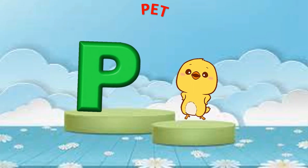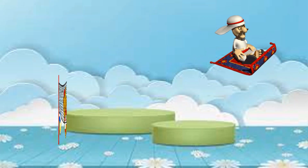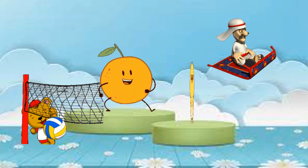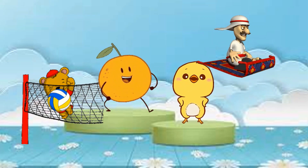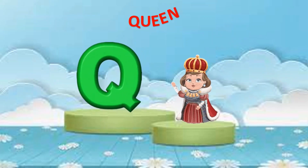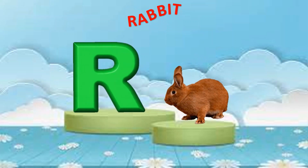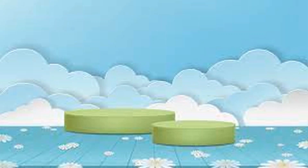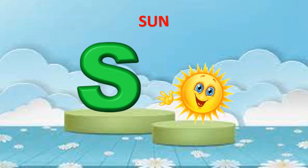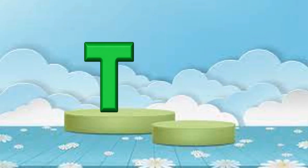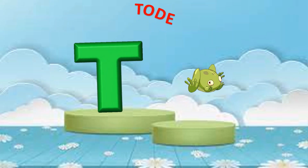Q is for queen, qu-qu-queen. R is for rabbit, r-r-rabbit. S is for sun, s-s-sun. T is for toad, t-t-toad.